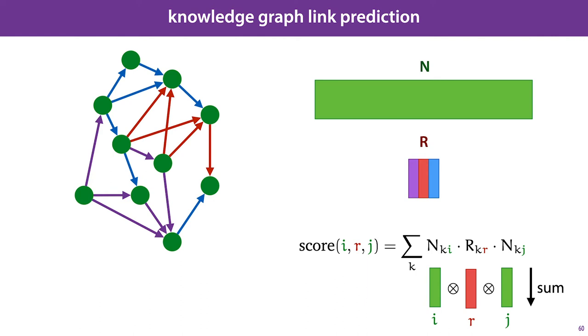So, for a particular node i, a relation r, and another node j, to predict whether there's a link between i and j of the type r, we look up these three embeddings, and we compute the three-way dot product. And the higher that three-way dot product is, the more likely there is to be a link.